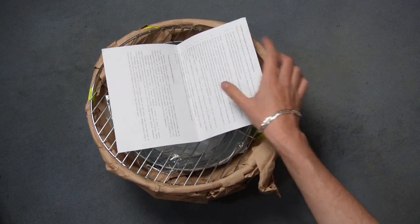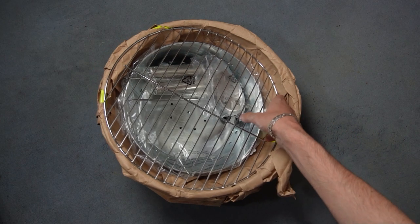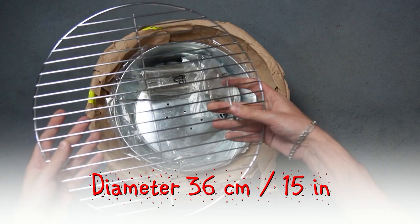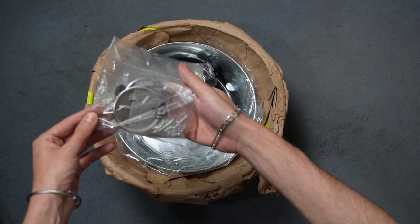The first item inside the box is a sheet with some safety precautions. Then this is the cooking grid. Its diameter is 36 centimeters or almost 15 inches. Next we can find a package with the needed bolts and nuts.